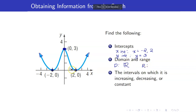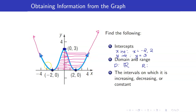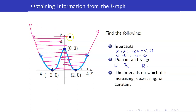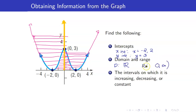What about the range? If you project the graph along the y-axis, you will cover a certain part. Take note that this part continues. When you project it, you cover from 0 up to infinity. The range is from 0 to infinity. We include 0 because when y equals 0, it has corresponding x-coordinates.